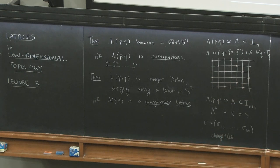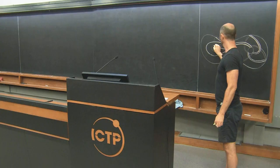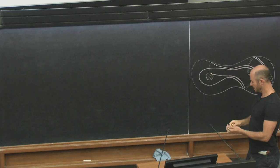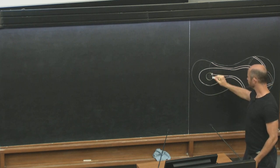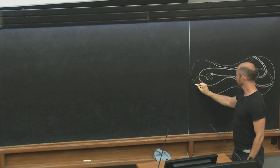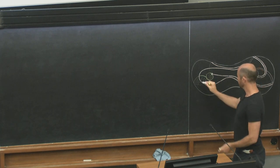I wanted to show a picture of one family of doubly primitive knots — the knots conjectured to be precisely the knots in the 3-sphere with lens space surgeries. Here we see a curve drawn on a genus-2 surface embedded as a Heegaard surface in the 3-sphere. The special property is that I can pick a loop on this surface bounding a disk in the exterior handlebody meeting the curve in a single point, and I can also draw a loop bounding a disk in the interior handlebody also meeting the curve in a single point.